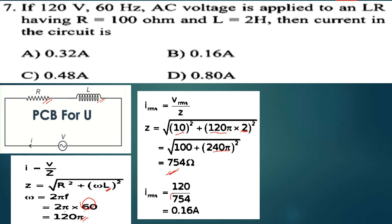If you check it, Z is 754 ohms. IRMS equals VRMS divided by Z, which is 120 divided by 754 ohms, giving 0.16 amps. So the answer is option B.